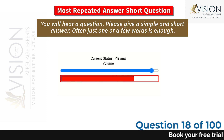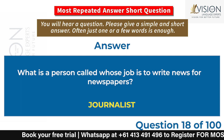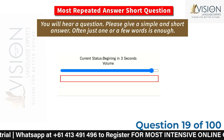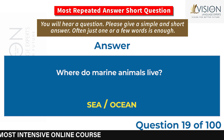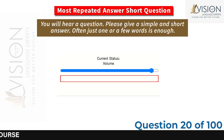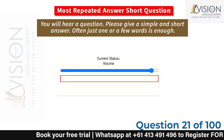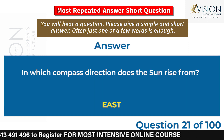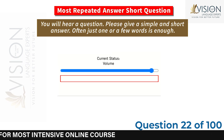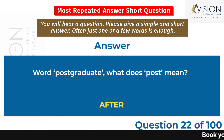What is a person called whose job is to write news for newspapers? Journalist. Where do marine animals live? Sea. In which compass direction does the sun rise from? East. In the word 'postgraduate,' what does 'post' mean? After.